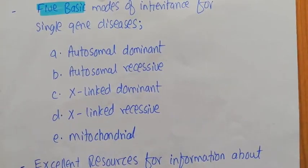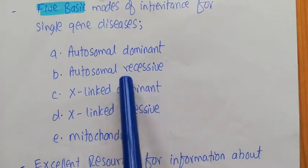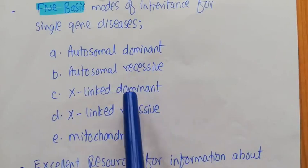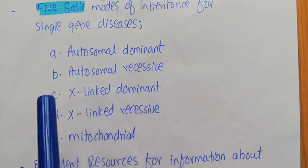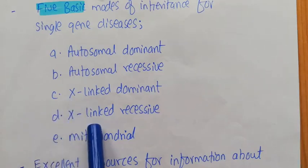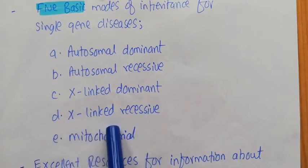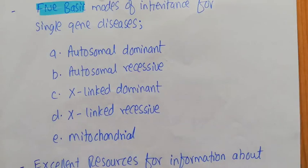X-linked dominant means the pattern is the same as autosomal dominant — it can express itself in homozygous as well as heterozygous conditions — but the gene causing that disease is present on the X chromosome. X-linked recessive means the gene is present on the X chromosome and can only express itself in the homozygous condition, meaning you need two copies of that particular allele for the presentation of that disease.